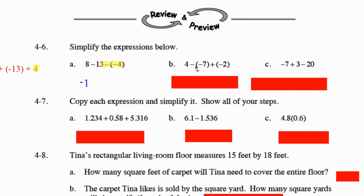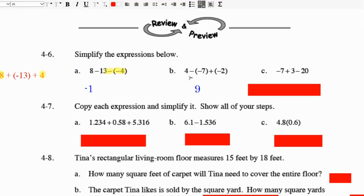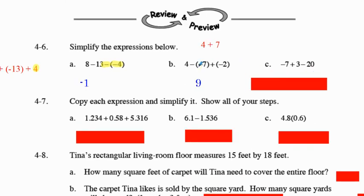Same concept for B. I want to see some work either on a number line, with integer tiles, or with a rewrite. If we did a rewrite, it would be 4 plus 7, because subtracting a negative is the same as adding a positive. 4 plus 7 equals 11, and then we are adding a negative 2, so we subtract those. The sign is positive.